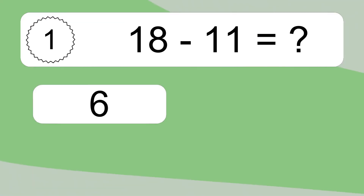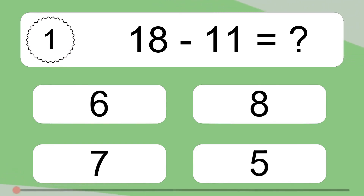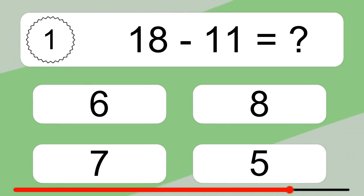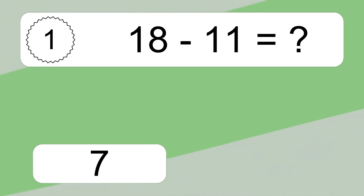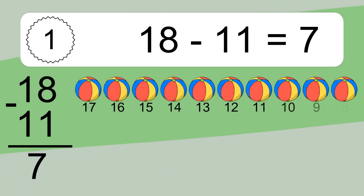18 minus 11 equals what? 18 minus 11 equals 7.